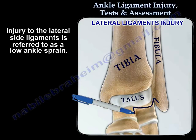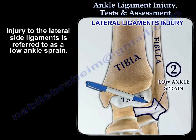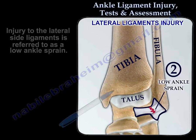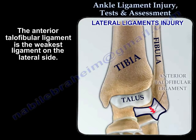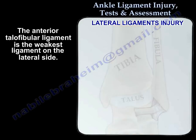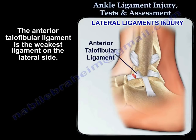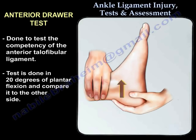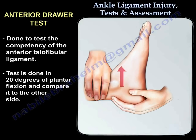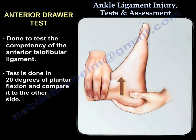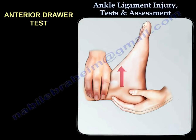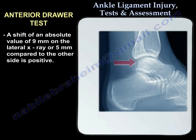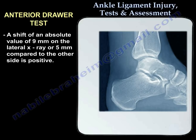Injury to the lateral side ligament is referred to as a low ankle sprain. The anterior talofibular ligament is the weakest ligament on the lateral side. The anterior drawer test is done to test the competency of the anterior talofibular ligament. The test is done in 20 degrees of plantar flexion and always compare it to the other side. A shift of an absolute value of 9 mm on the lateral x-ray, or 5 mm compared to the other side, is positive.